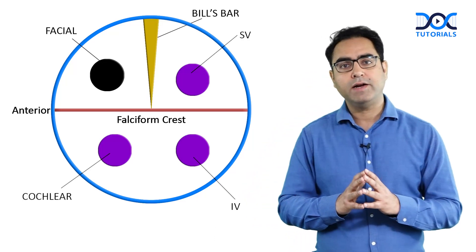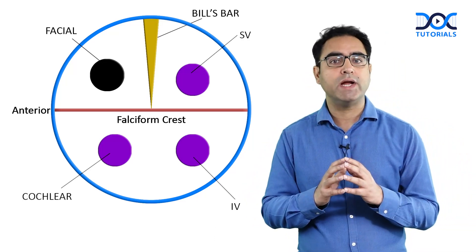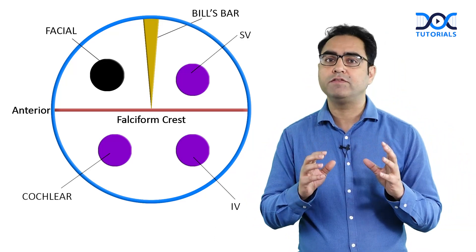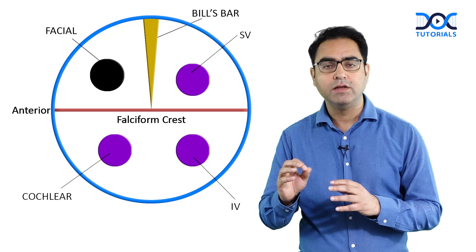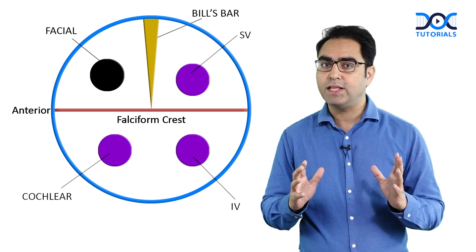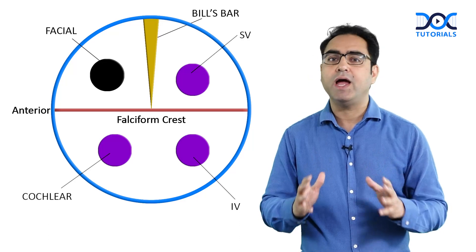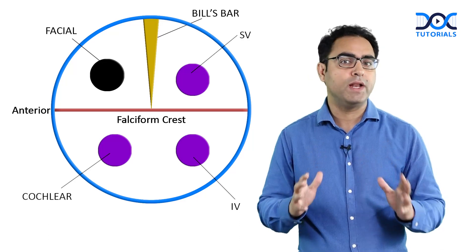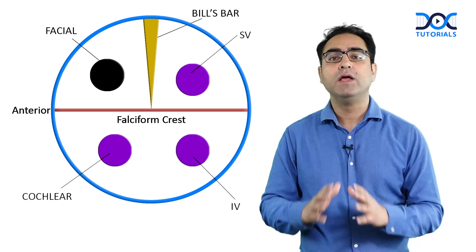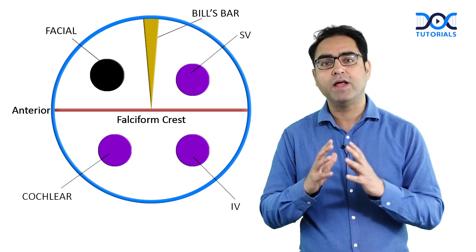Points to remember: number 1, the internal auditory meatus as an anatomical landmark; number 2, Bill's bar — do not forget that; and number 3, the facial nerve lying in the anterosuperior compartment of the internal auditory canal. Keep learning, guys.